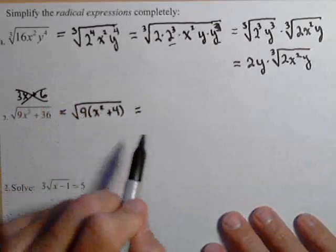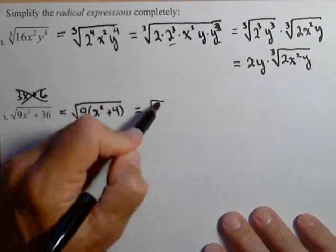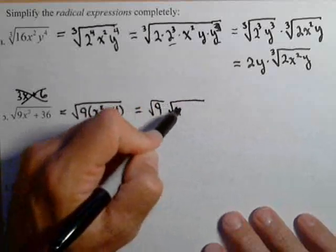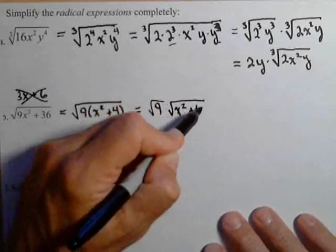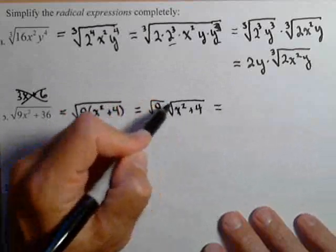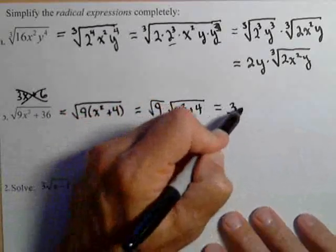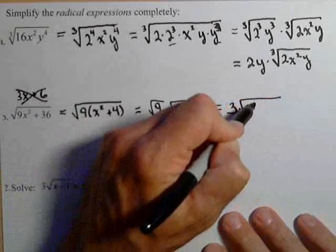Now I can split up the radical like we did last time. Square root of 9 times the square root of x² plus 4. Square root of 9 is 3 times the square root of x² plus 4.